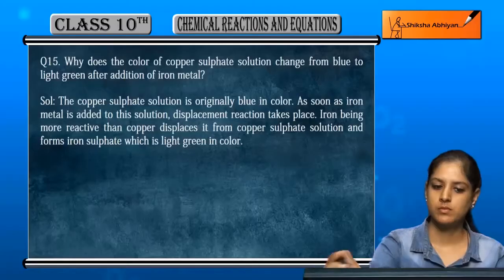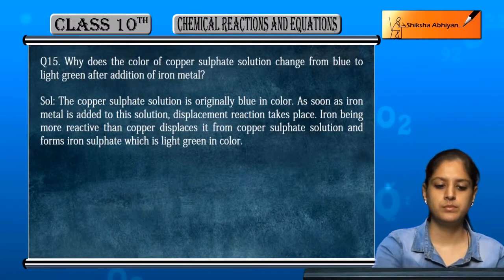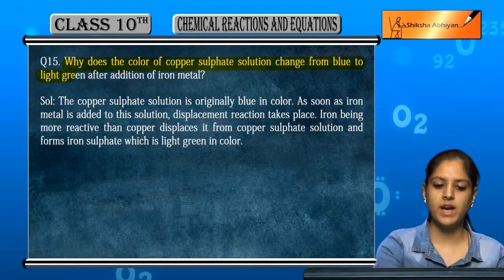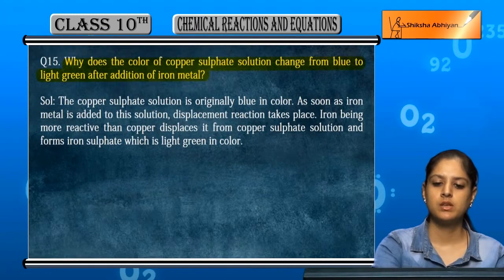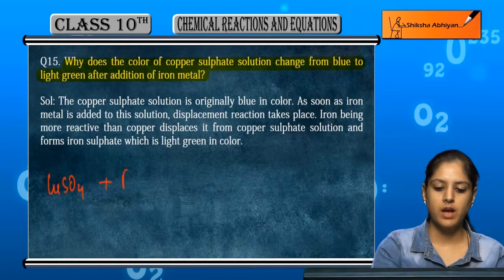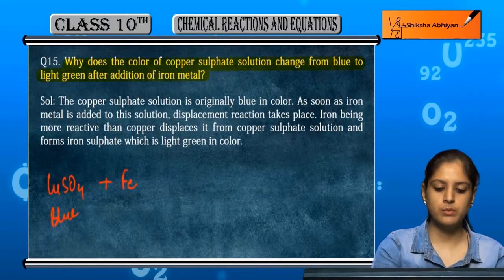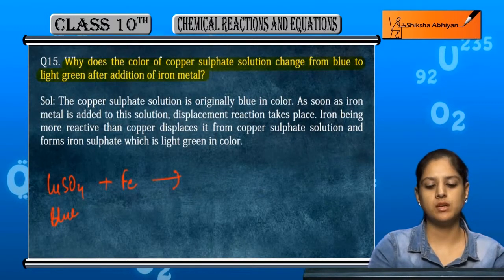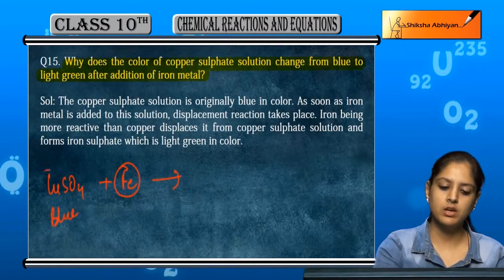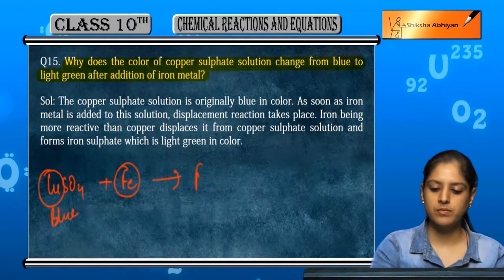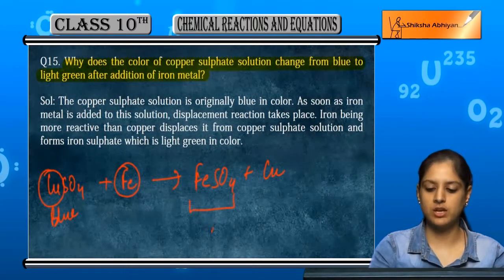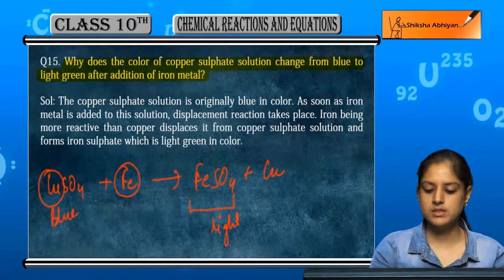Question 15: Why does the color of copper sulfate solution change from blue to light green after addition of iron metal? Copper sulfate solution, that is CuSO₄, is blue in color. When iron is added, iron is more active than copper, so it will displace copper from CuSO₄, and iron sulfate (FeSO₄) forms, which is light green in color.